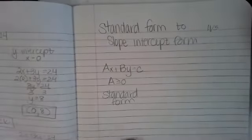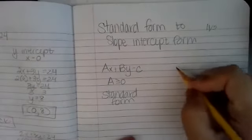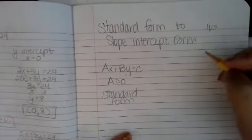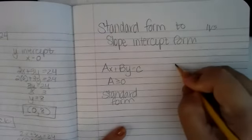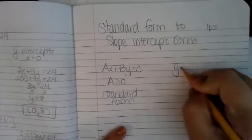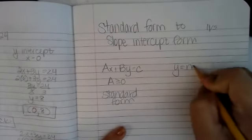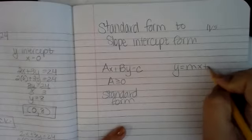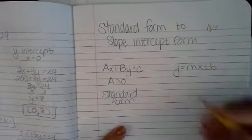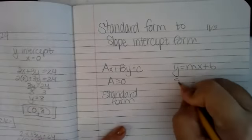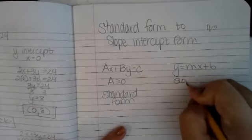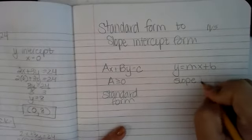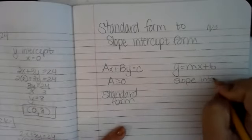Then we have slope intercept form, which is y equals mx plus b. This is my slope, and this here is my y-intercept. That is slope intercept form.